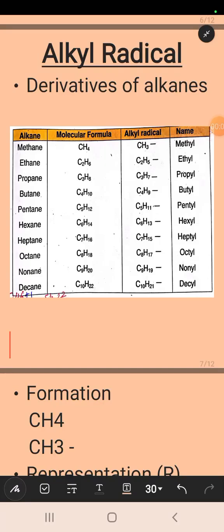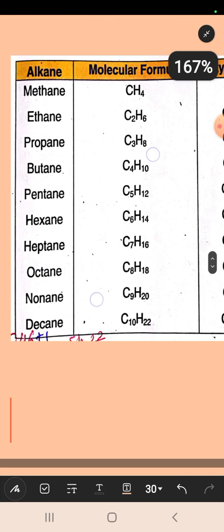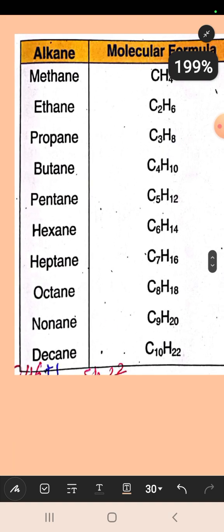The next topic is alkyl radicals. Alkyl radicals are defined as derivatives of alkanes. Derivatives means compounds obtained from another compound. For example, these are all alkanes: methane, ethane, propane, butane. They all have single covalent bonds and are paraffins, meaning less reactive. Their molecular formulas are given in front of you.